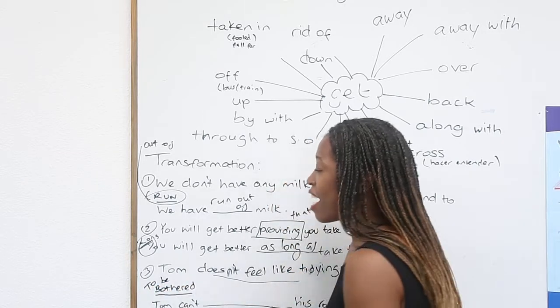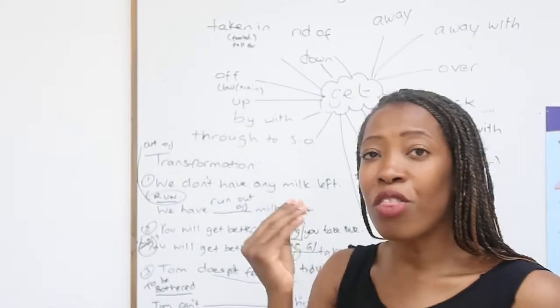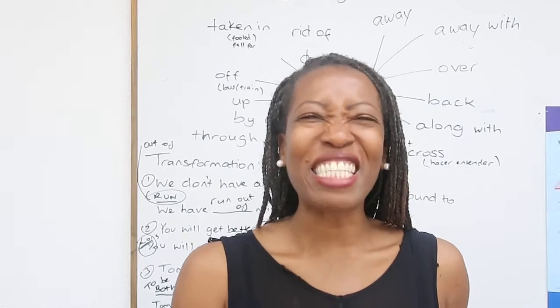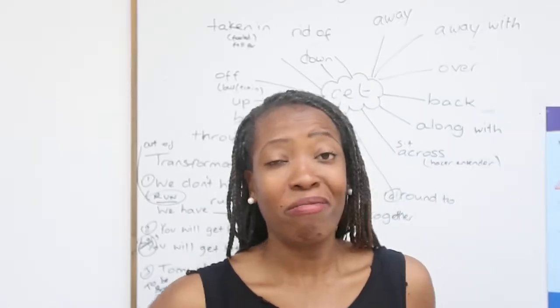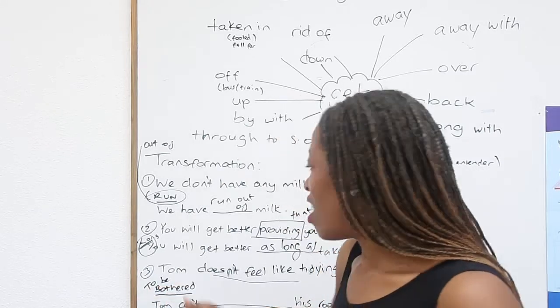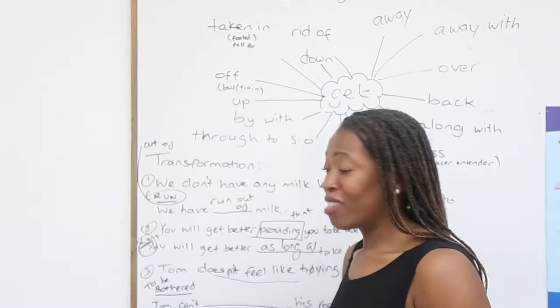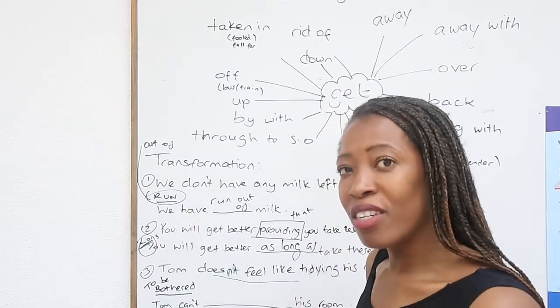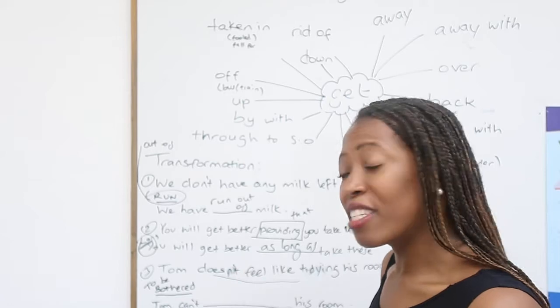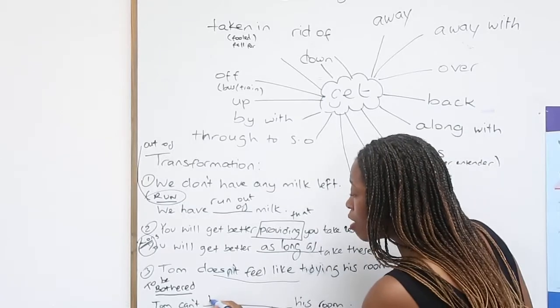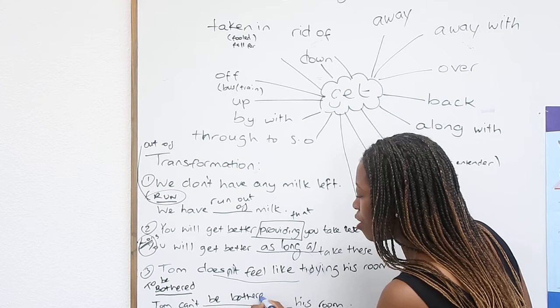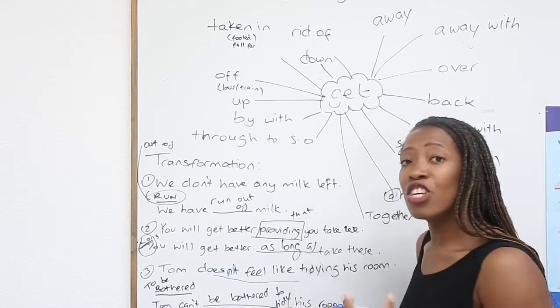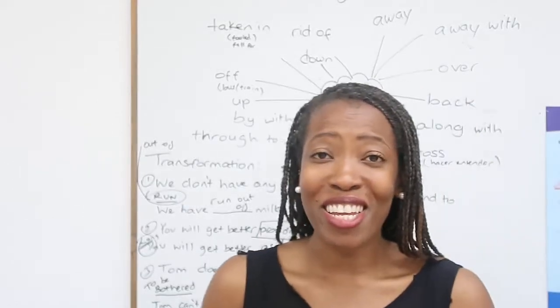Now the expression that you should know is to be bothered. We need an auxiliary verb for that one. To be bothered means to have the appetite to do something, to fancy doing something. I don't fancy doing that. I can't be bothered. You normally use it in negative. Tom can't be bothered to tidy his room. He cannot be bothered to tidy his room.